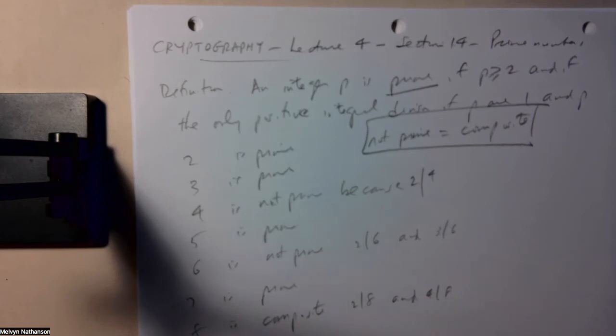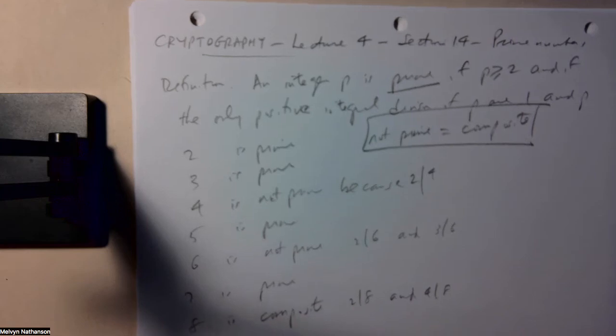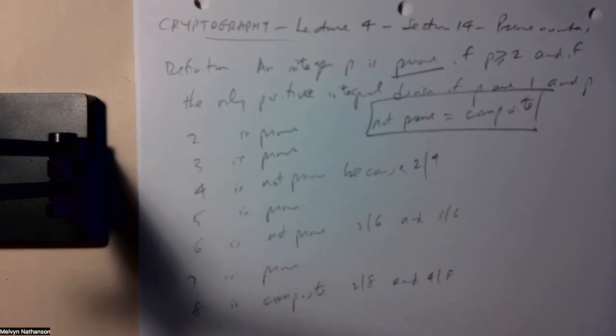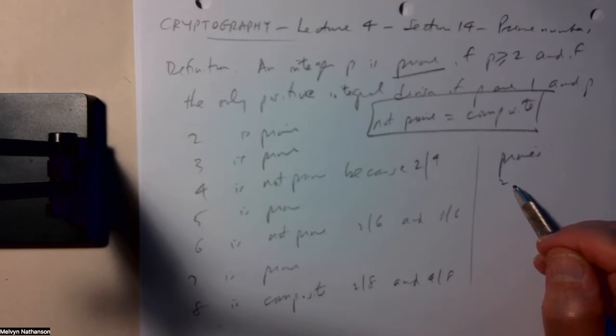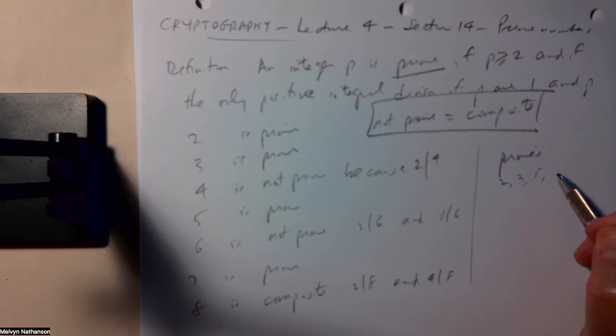It's a useful exercise to go through the integers, starting with 2, and find those that are prime and those that are not prime. If you start making a list of integers that are prime, the only even number that's prime is 2. Every other number has to be odd: 3, 5, 7, 11, 13, 17, 19, 23.